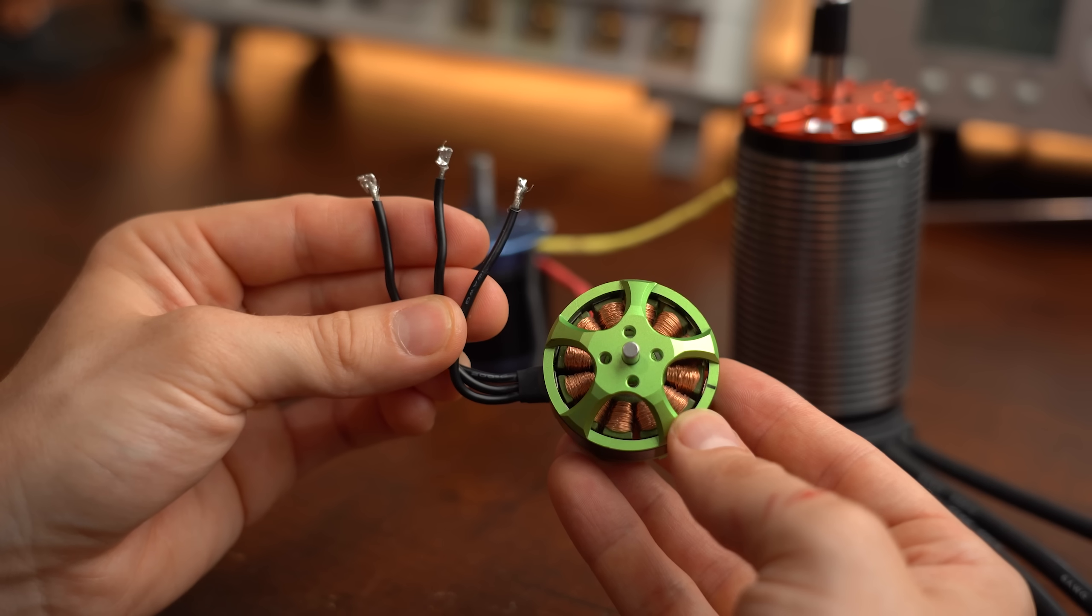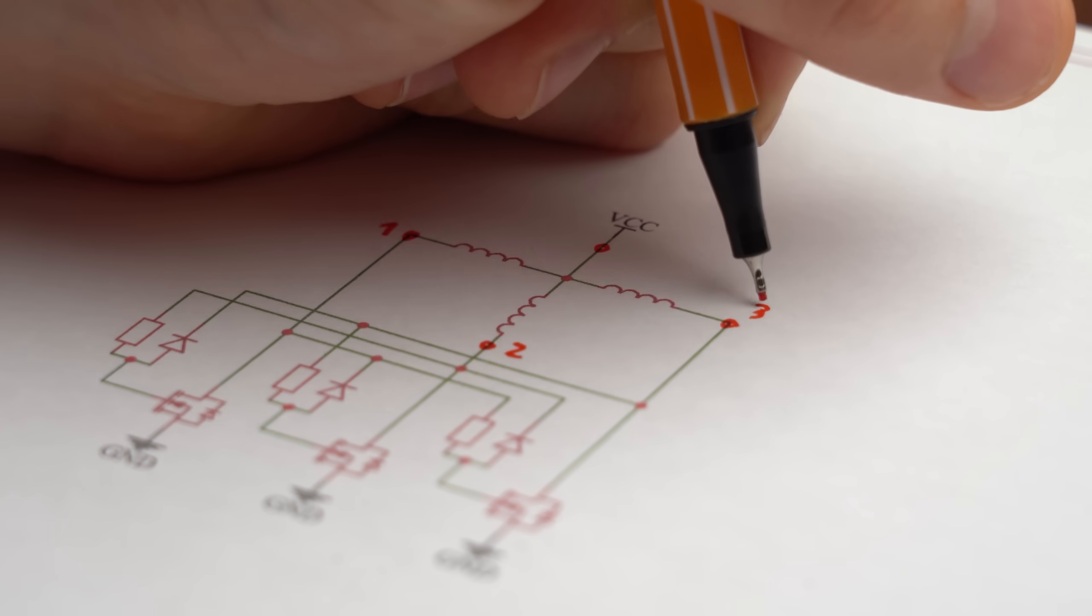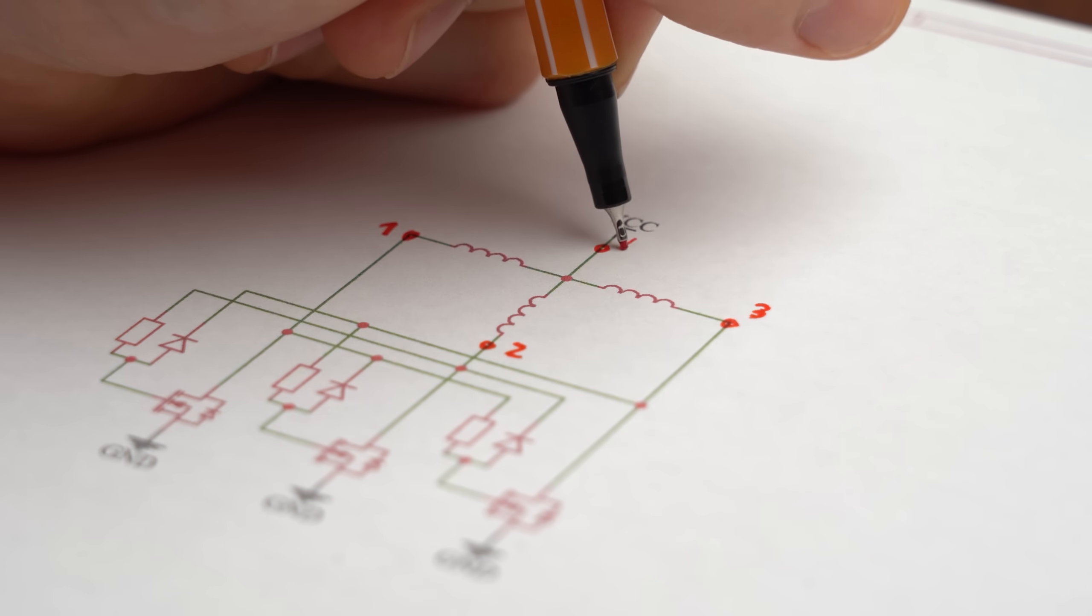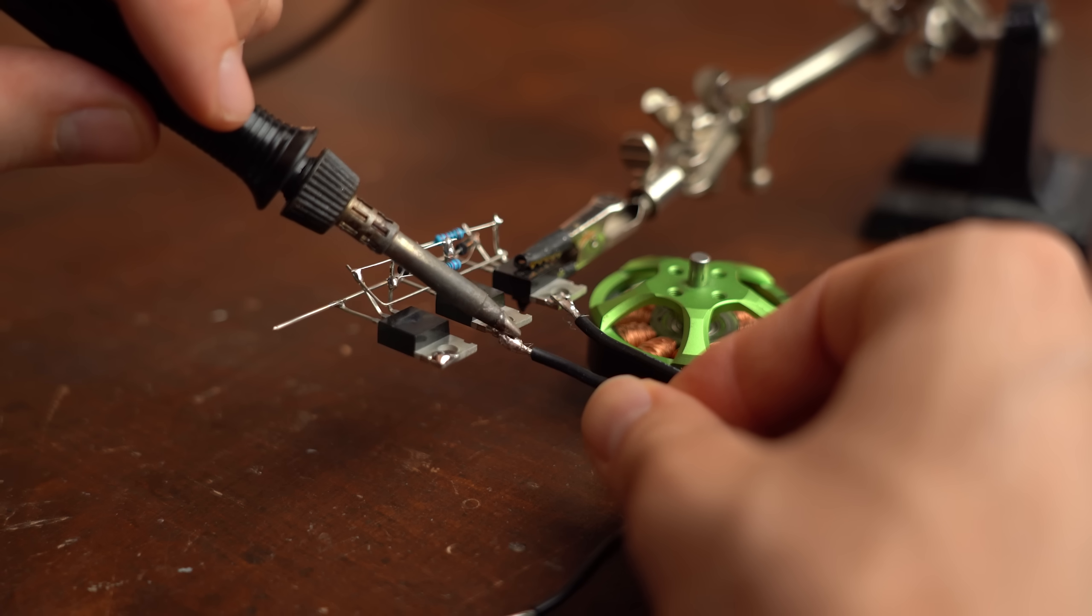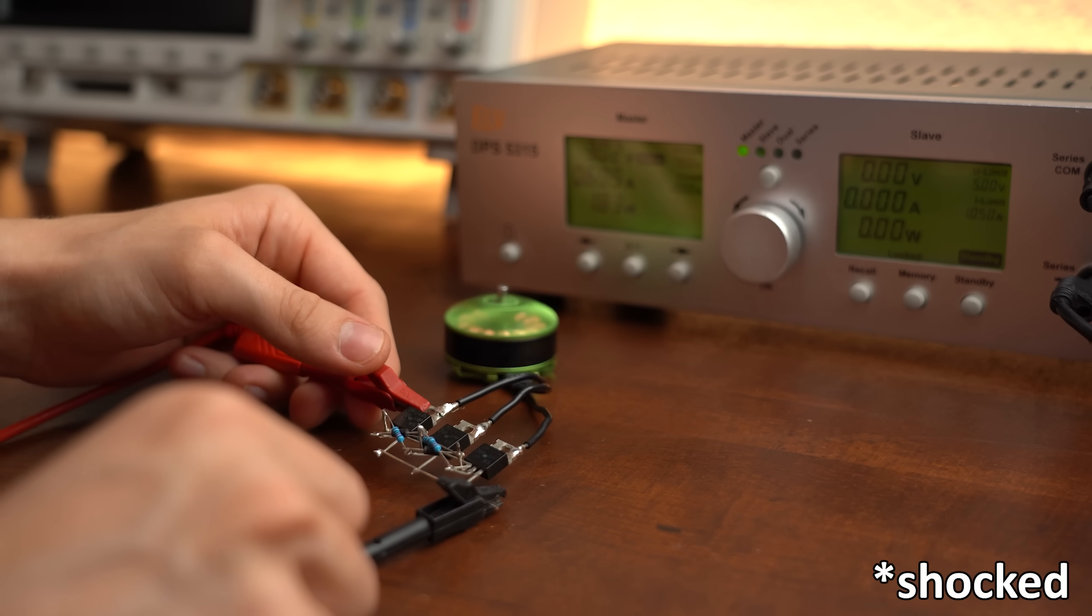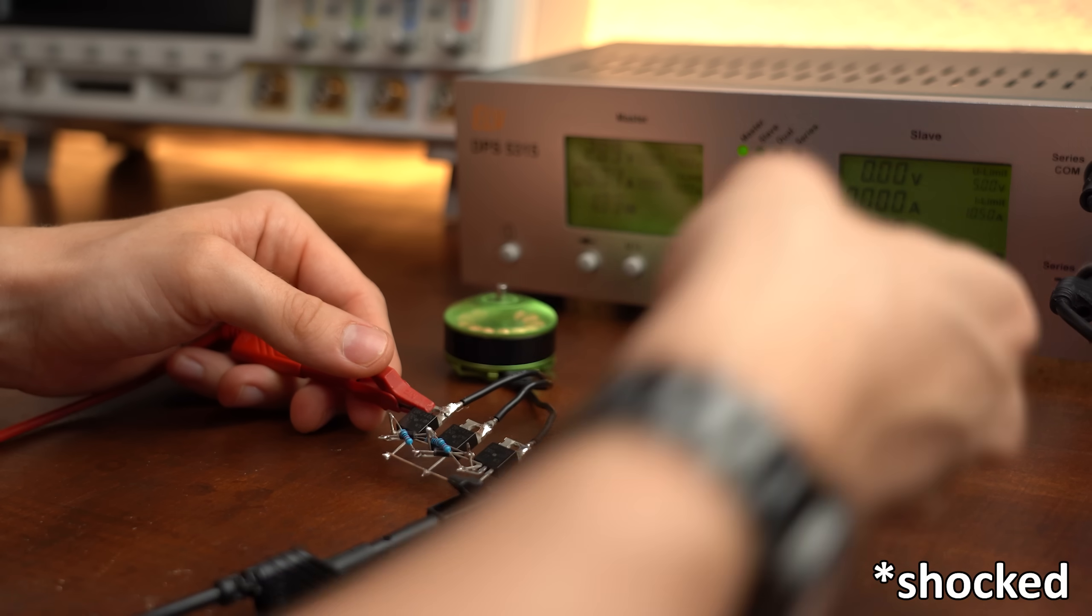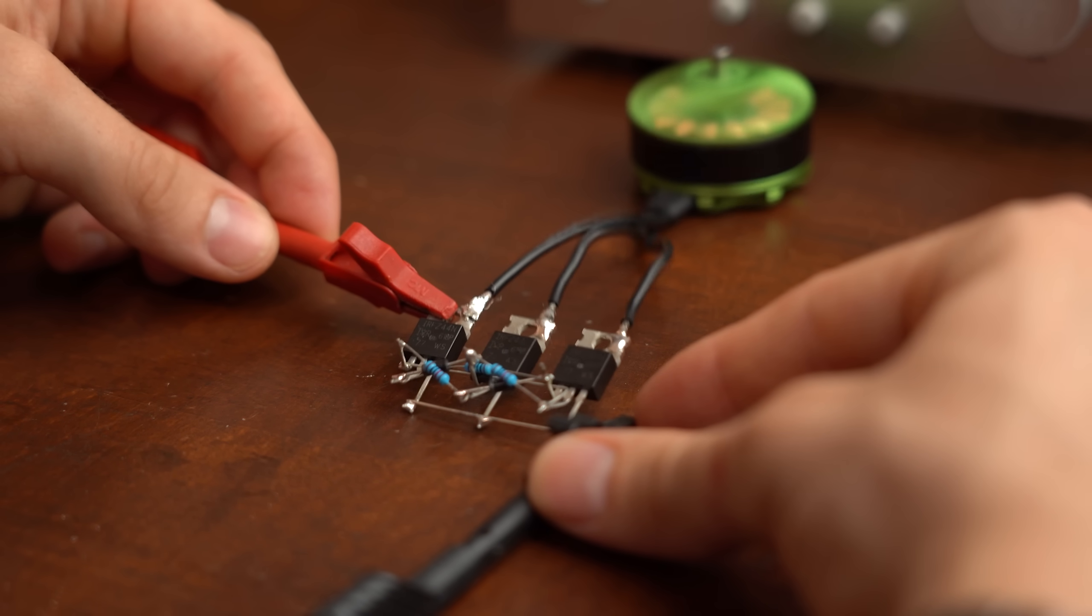You see, pretty much all commercial BLDC motors come with 3 wires, but the motor shown in the video and schematic requires 4 wires. Now truth be told though, I accidentally discovered that this circuit also works with 3-wire motors and we will have a quick look at that later, but for now let's imagine only 4-wire ones work.